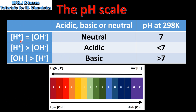Next we look at the relationship between the concentration of hydrogen ions and the concentration of hydroxide ions. If the concentration of hydrogen ions is equal to the concentration of hydroxide ions, the substance is neutral and the pH at 298 K is seven.